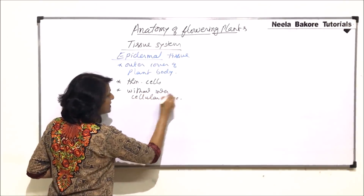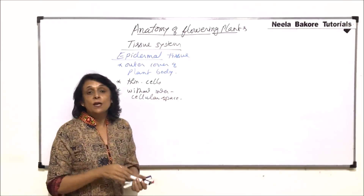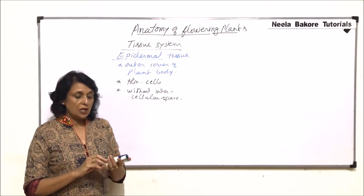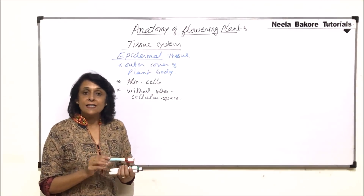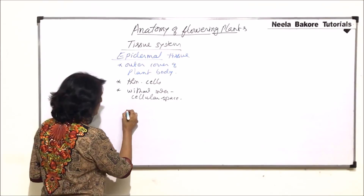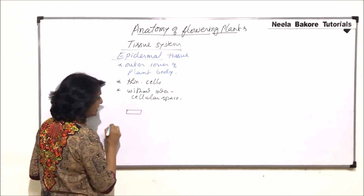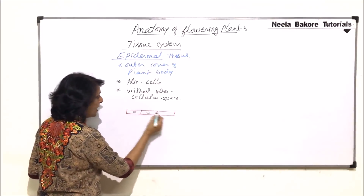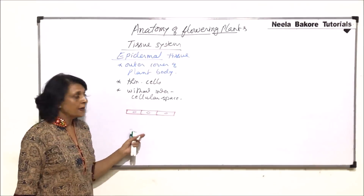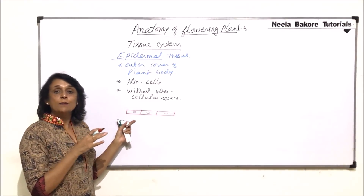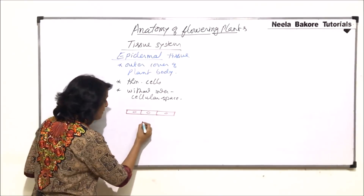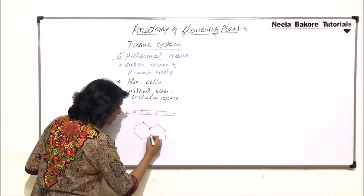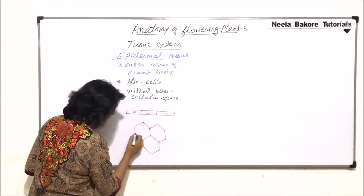Now why is this space not required? It is making a cover, so the cover has to be in the form of a continuous sheet. If we draw these cells and look at the epidermis from the side, we see flat cells arranged edge to edge with a large nucleus.